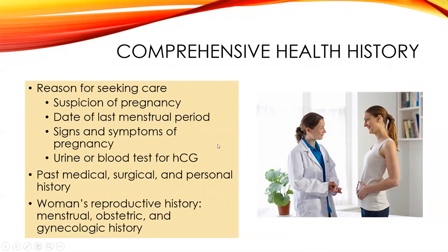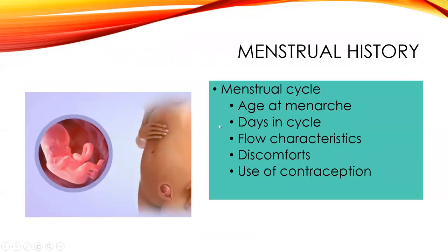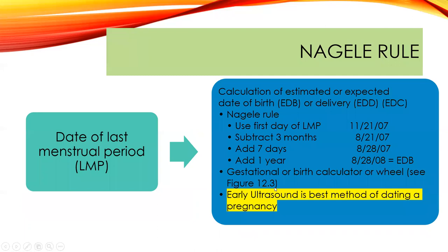The first prenatal visit is usually the longest. When looking at her menstrual history, we note when she started her period, how many days in her cycle, flow characteristics, and past contraception use. One tool we can use is called Naegele's Rule — a way of estimating the date of birth based on the last menstrual period.